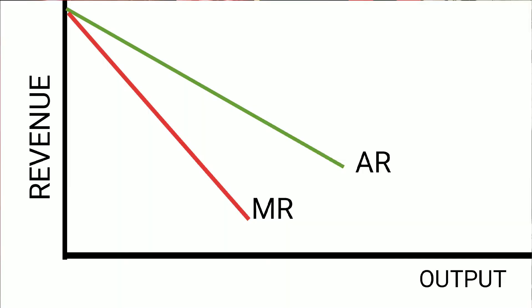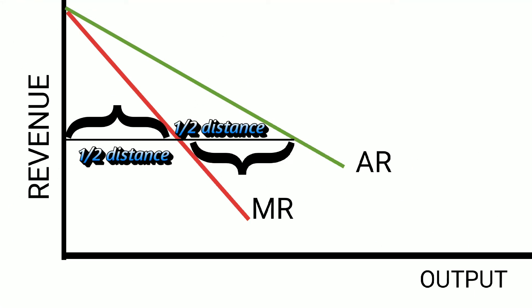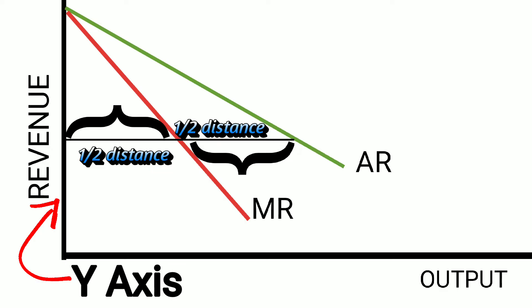Now I would like to start the discussion about the AR and MR curves. On the diagram you can see a curve where AR is the average revenue curve and MR is the marginal revenue curve. You have to remember that the MR curve always lies halfway between the AR and the Y-axis.